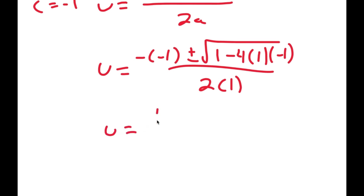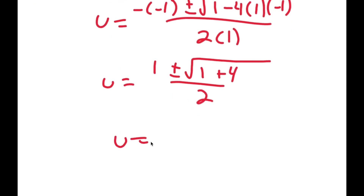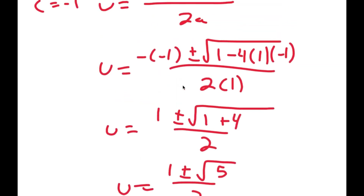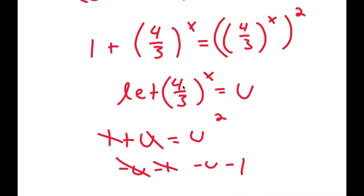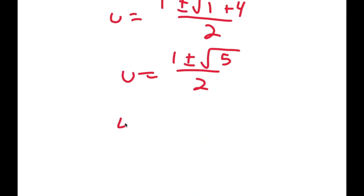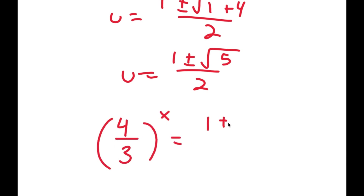This is equal to positive 1 plus or minus the square root of 1 plus 4 over 2, which is equal to 1 plus or minus the square root of 5 over 2. So we have u is equal to 1 plus or minus the square root of 5 over 2. Remember how we let 4 over 3 to the power of x equal to u — this means that 4 over 3 to the power of x is equal to 1 plus or minus the square root of 5 over 2.